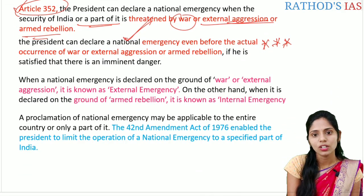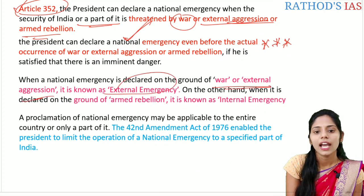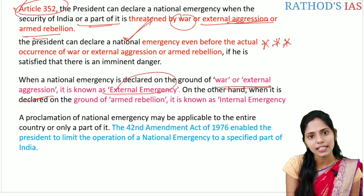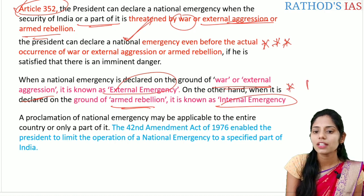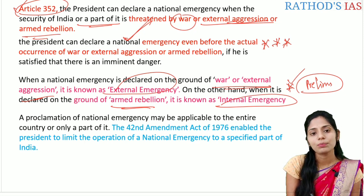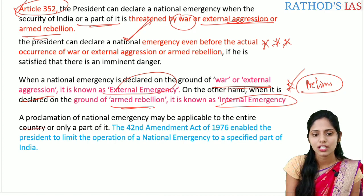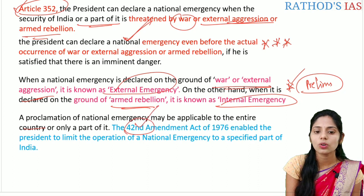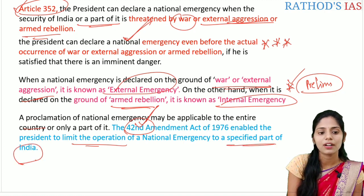When national emergency is declared on the grounds of war or external aggression it is called external emergency, and when declared on the grounds of armed rebellion it is called internal emergency. This is very important from the prelims point of view. Also, the proclamation of national emergency may be applicable to the entire country or any part of it. The 42nd constitutional amendment act enables the president to limit the operation of national emergency to a specific part of India — this is an important prelims fact.